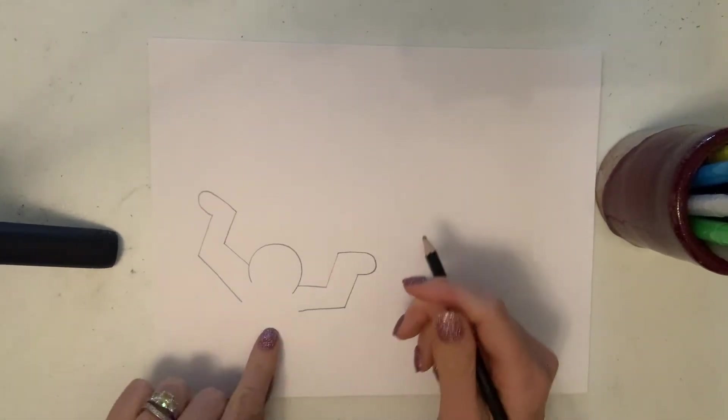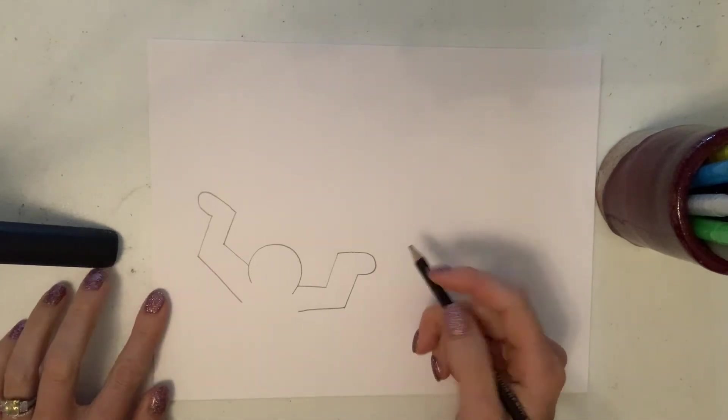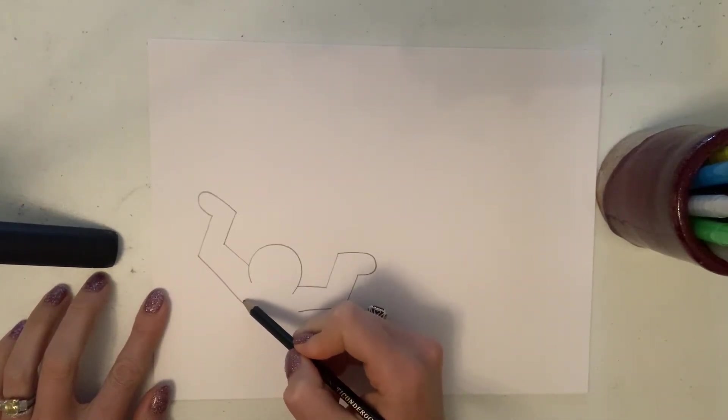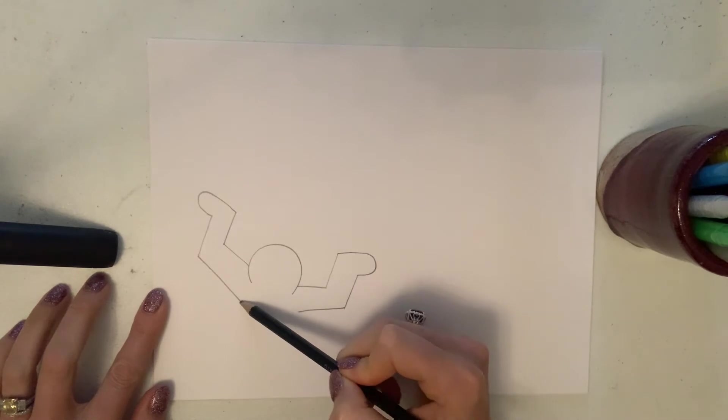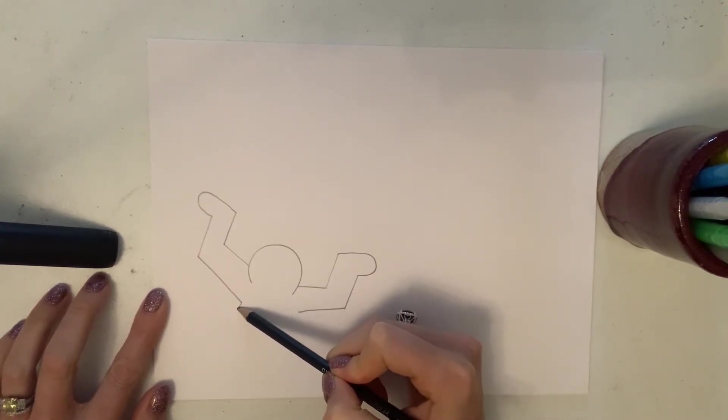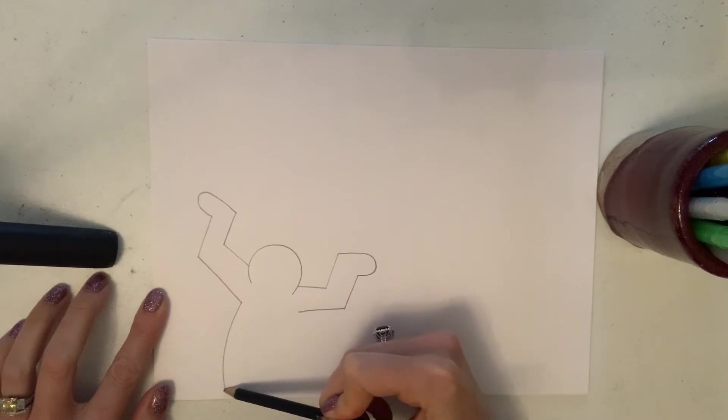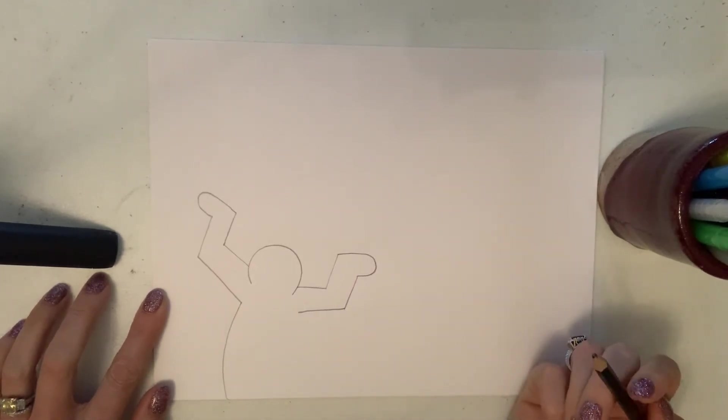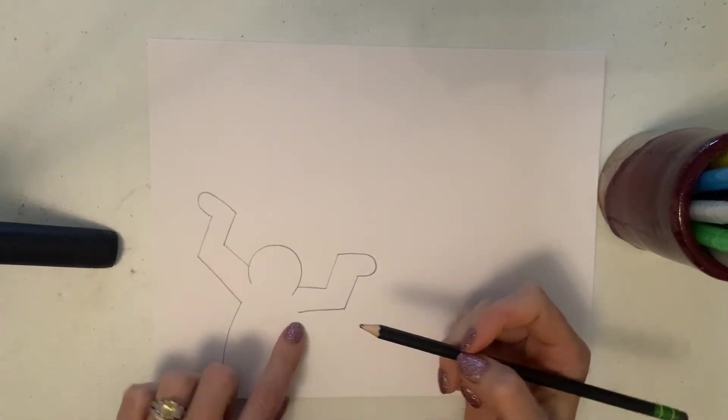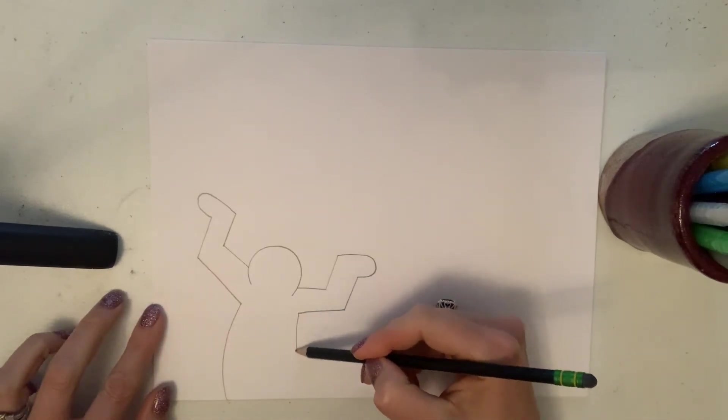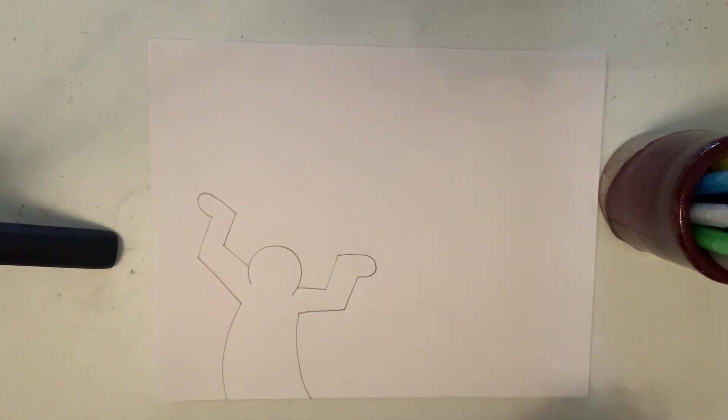And now we're going to draw the body coming towards the bottom of the page. Start where your arm finished and make a curved line that comes down. Do the same thing on this side. Now it looks like he's dancing.